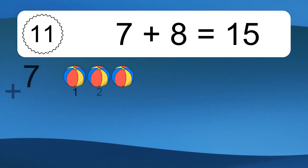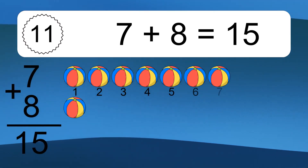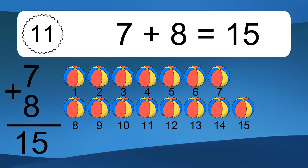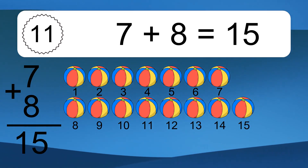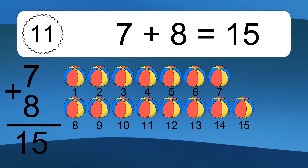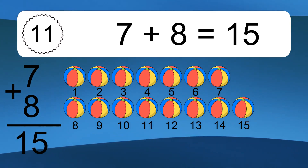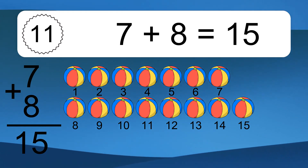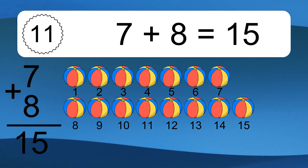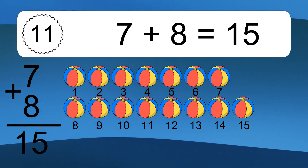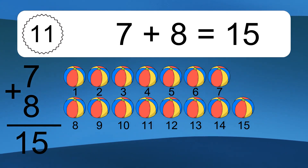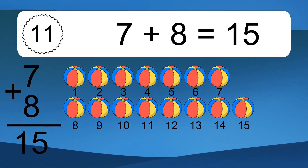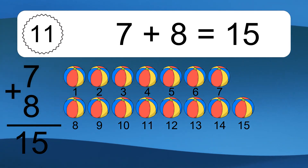7 plus 8 equals 15. Let's count it: 1, 2, 3, 4, 5, 6, 7, 8, 9, 10, 11, 12, 13, 14, 15.